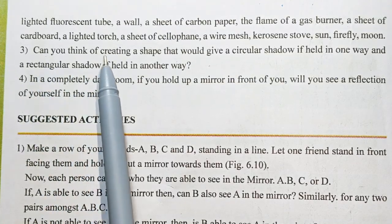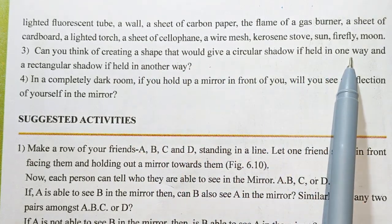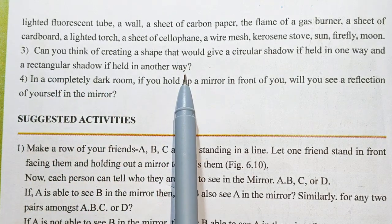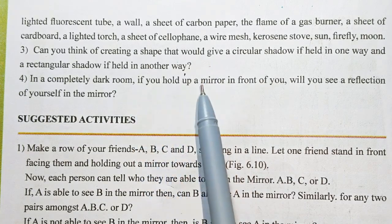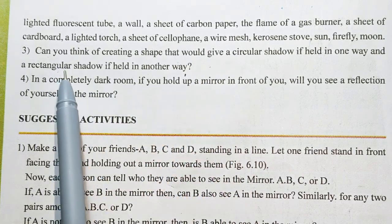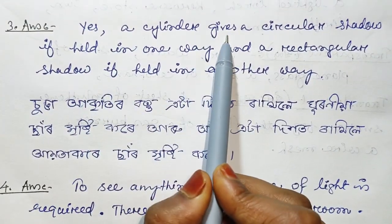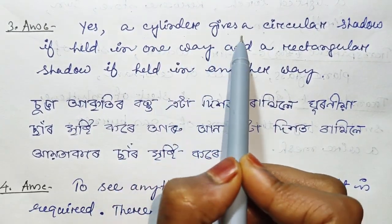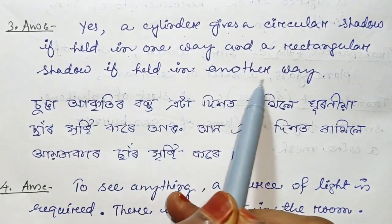Question number 3: Can you think of a shape that would give a circular shadow if held in one way and a rectangular shadow if held in another way? A cylinder gives a circular shadow if held in one way and a rectangular shadow if held in another way.